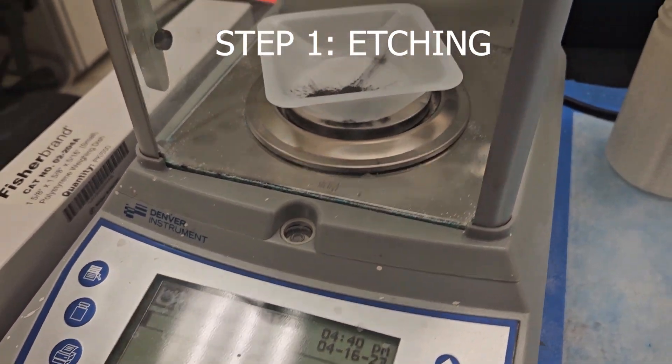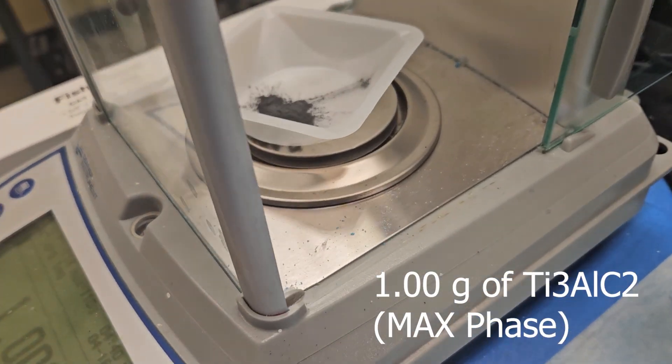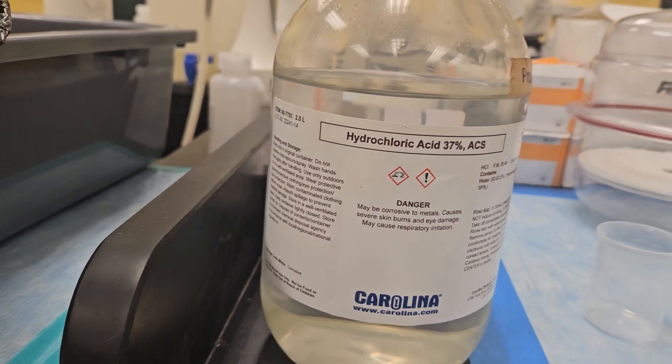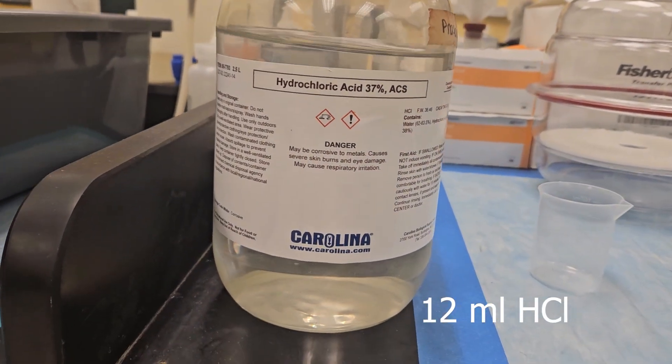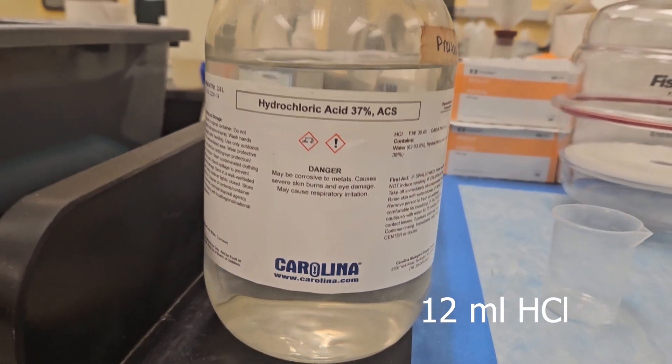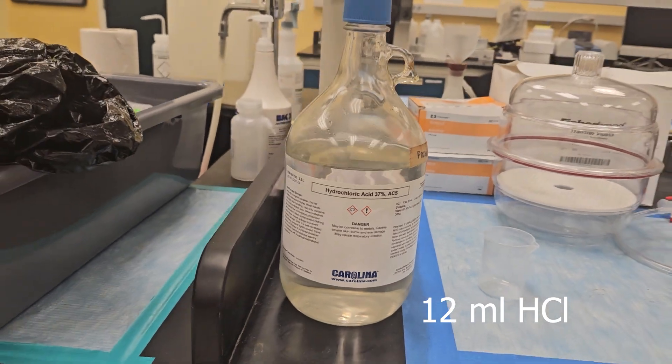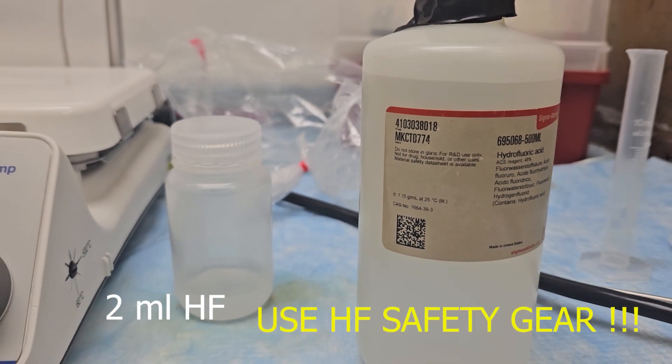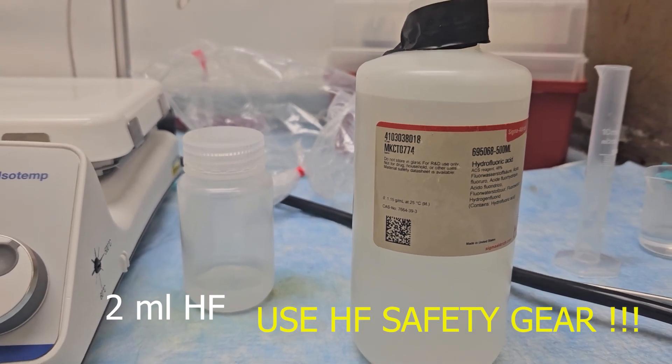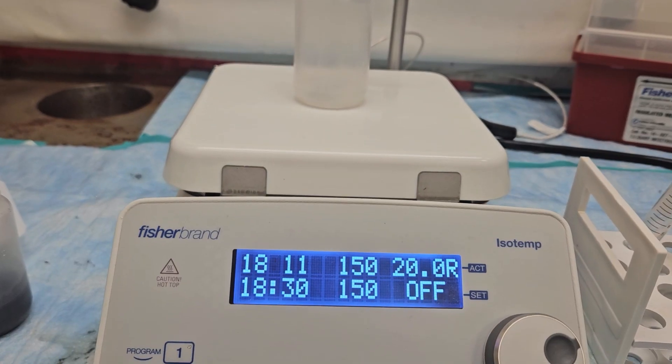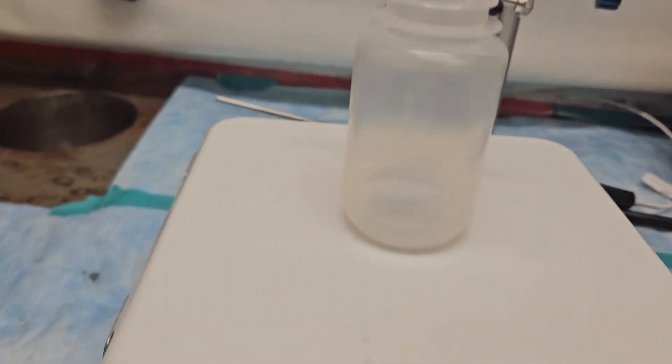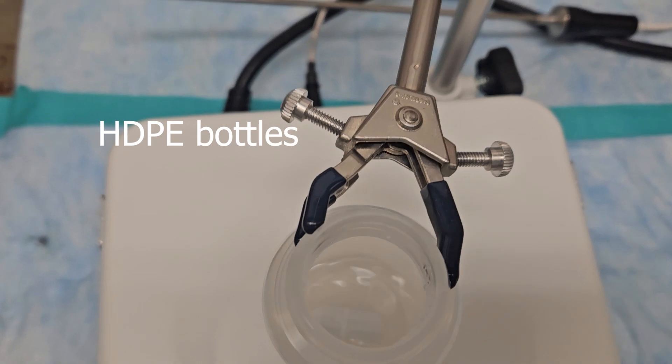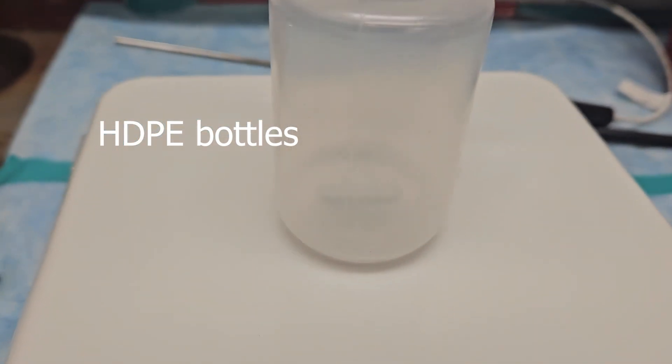Start by weighing out one gram of titanium aluminum carbide, and we're going to combine that with 12 milliliters of hydrochloric acid and 2 milliliters of hydrofluoric acid. It's very important that you have your hydrofluoric acid spill kit nearby, as well as your hydrofluoric acid safety gear on hand. Additionally, hydrofluoric acid is an etching agent to glass beakers. Therefore, the use of high-density polyethylene bottles is highly suggested.